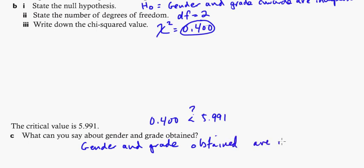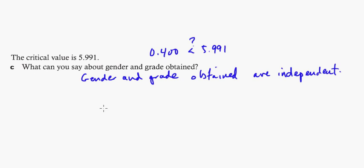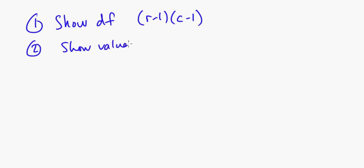Every single problem they do like this are all pretty much the same. You go through the same things. You need to be able to, what do you need to be able to do in these problems? You need to be able to show the degrees of freedom. And that's just rows minus 1 times columns minus 1. You need to be able to show the expected value. And that is just the column times the row over the total.